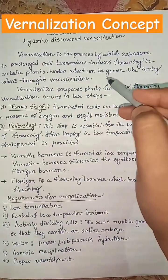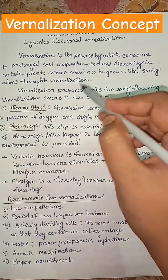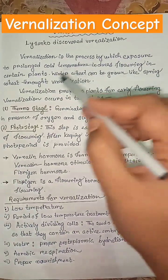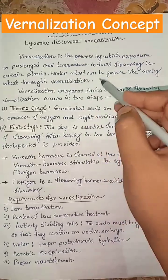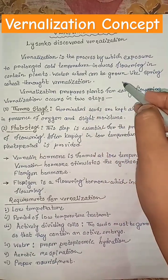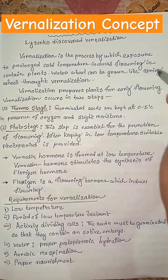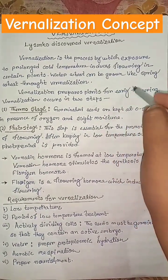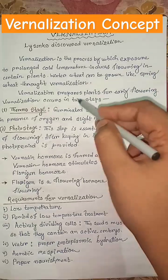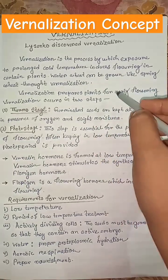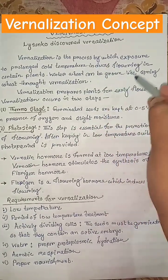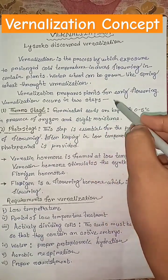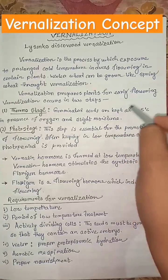What is vernalization? Vernalization is the process by which exposure to prolonged cold temperature induces flowering in certain plants. Winter wheat can be grown like spring wheat through vernalization. Lysenko discovered vernalization. Vernalization prepares plants for early flowering.